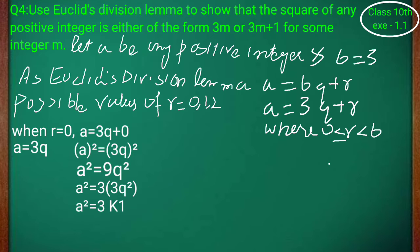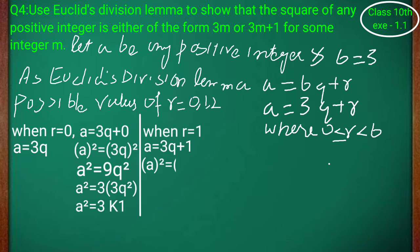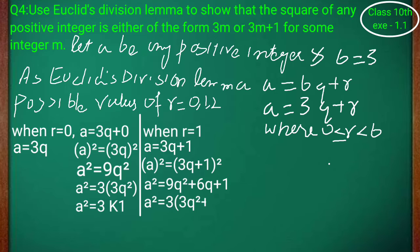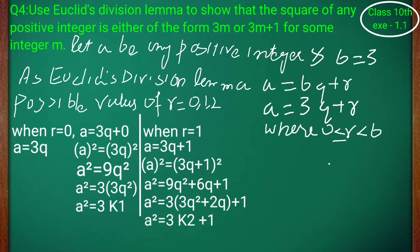When r equal to 1، equation بنے گی a equal to 3q plus 1۔ Square کریں گے both sides: a² equal to (3q+1)²۔ Formula a plus b کا whole square equal to a² plus 2ab plus b² استعمال کریں گے۔ تو a² equal to 9q² plus 6q plus 1۔ 3 کو common لیں: a² equal to 3(3q² plus 2q) plus 1۔ اس (3q²+2q) کو let k2 کر لیتے ہیں تو a² equal to 3k2 plus 1۔